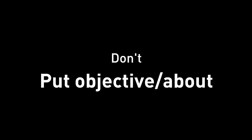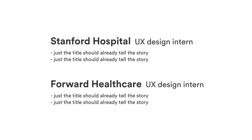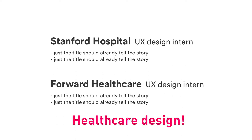Don't put an objective or about section. This used to be a thing, but it's not really needed in 2021. It just saves you more time and space for relevant experiences. A well-written resume should already convey a sense of your intent and interest, which is what an objective and about section are about. For example, you can tell this candidate is interested in AR and immersive technologies, or this one is in healthcare — just from the resume content itself.